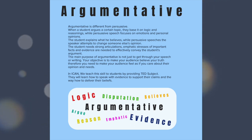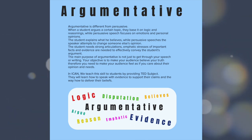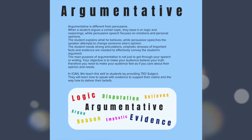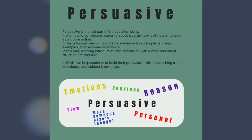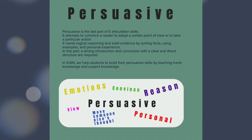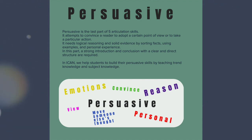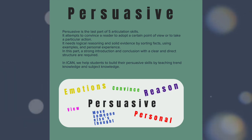Argumentative: the main purpose of argumentative writing is not just to get through your speech or writing — your goal is to make your audience believe your truth. Persuasive writing attempts to convince a reader to adopt a certain point of view or take a particular action, requiring logical reasoning and solid evidence by sorting facts, using examples, and personal experience.